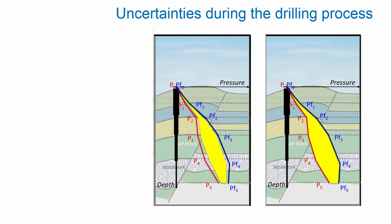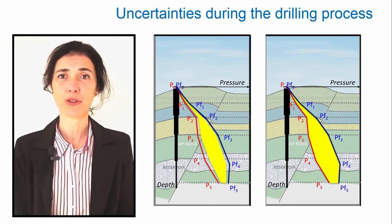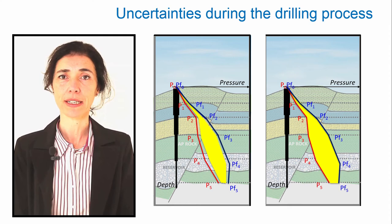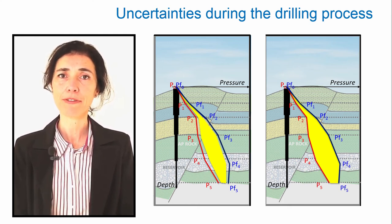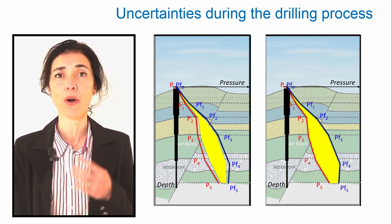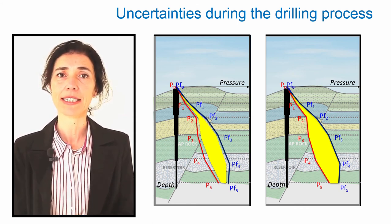Here is an example of two well pressure profiles — one is an exploration well, the other is a development well. When a well has to be drilled in a new region, there are many uncertainties about the data, including those related to the pore and fracture pressure profiles. On the contrary, when a development well is planned, it benefits from data from the surrounding wells already drilled. In this case, the pressure profiles are well known and the uncertainties are lower.